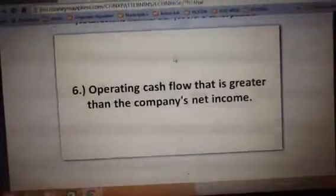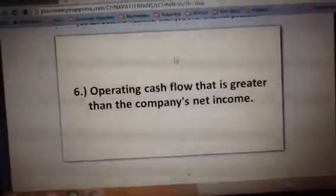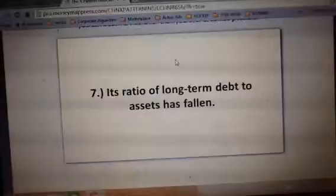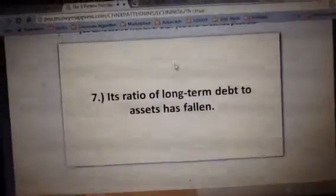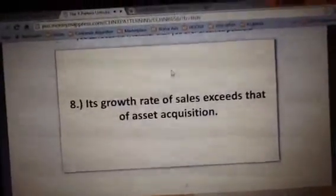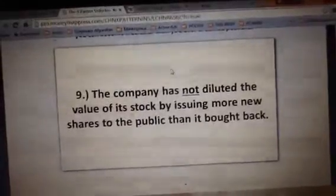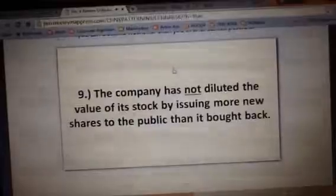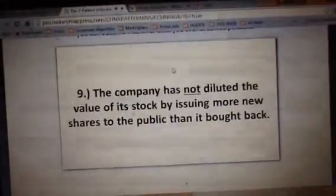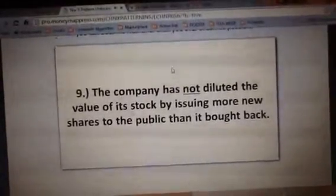Six, operating cash flow is greater than the company's net income. Seven, its ratio of long-term debt to assets has fallen. Eight, its growth rate of sales exceeds that of asset acquisition. And nine, during the one-year window, the company has not diluted the value of the stock by issuing more new shares to the public than it bought back.